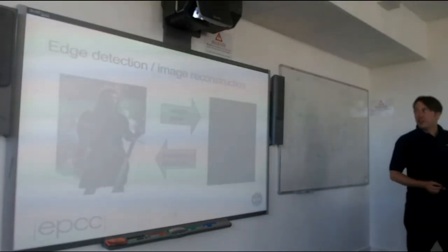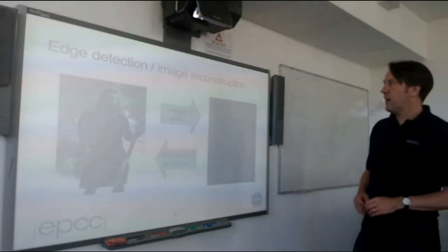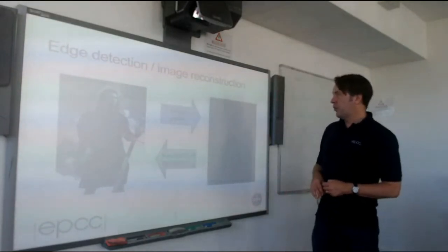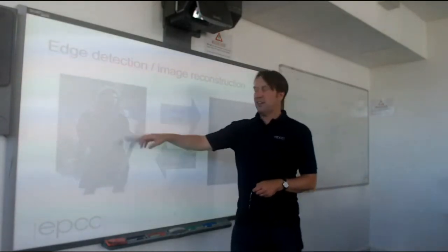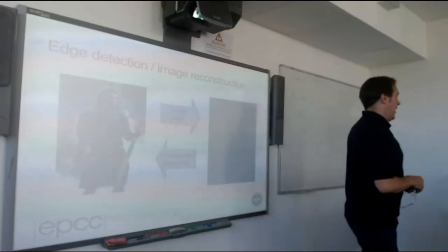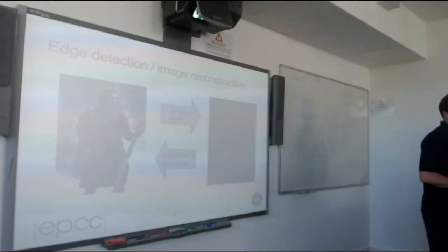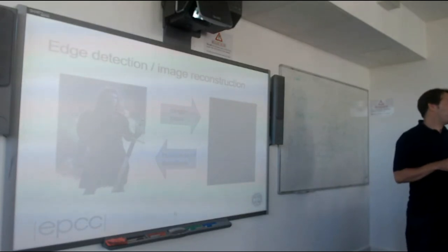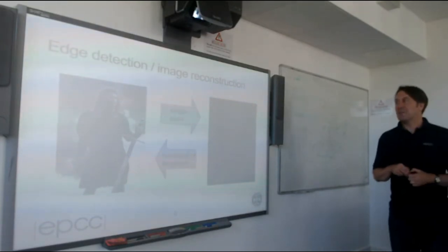We're going to do edge detection on an image. The picture is Mel Gibson playing William Wallace, who is very popular in Scotland — he did one of the most popular things you could do in Scotland, which is kill lots of English people.